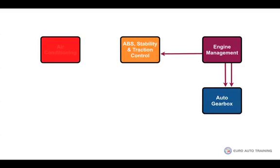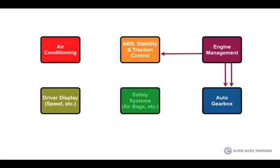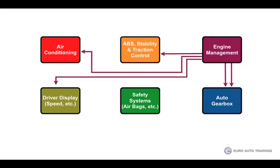With an increasing number of different systems being fitted to vehicles, it inevitably increases the amount of information that is shared between the different ECUs. This adds a considerable amount of wiring, usually copper, which further adds to the weight, the cost, and potential unreliability.